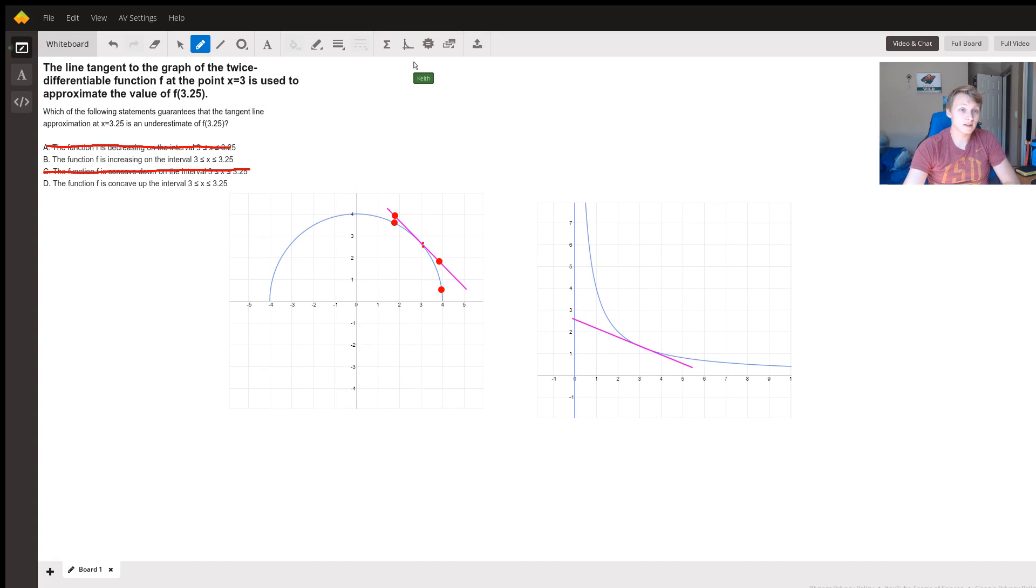And in fact, we do have at every point between zero and off to infinity, our approximation is going to be under the actual value of the function at that point, right? So everywhere where there is the tangent line, it is less than. So here at 3.25, it's kind of tough to see.